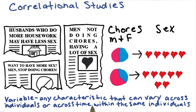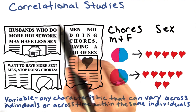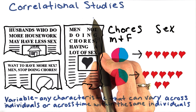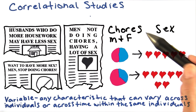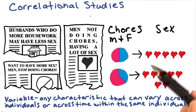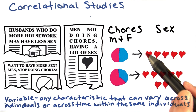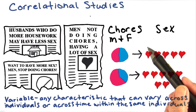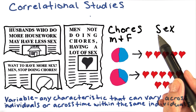A variable is any characteristic that can vary across individuals or across time within the same individuals. This is a correlational study because we are not manipulating any variables. Instead, we are simply observing a mathematical relationship between two variables.